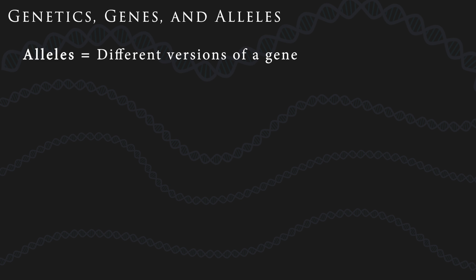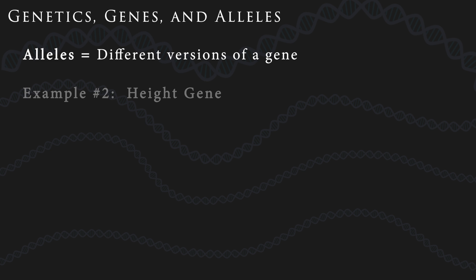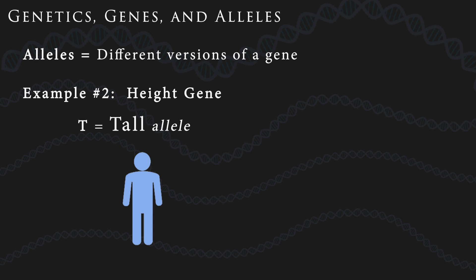Each gene can come in different versions, and those versions are called alleles. So for a gene that affects hair color, you might have a brown hair allele and a blonde hair allele. Or for height, a tall allele and a short allele.